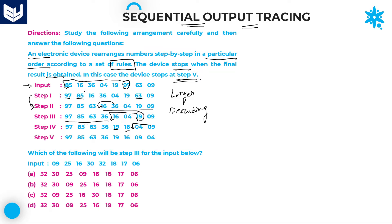The logic being applied is: whatever the input, the order doesn't matter — the final step writes all given numbers in descending order. That is the logic. Now you can solve the questions based on this same logic. See here: which of the following will be step 3 for the input below?